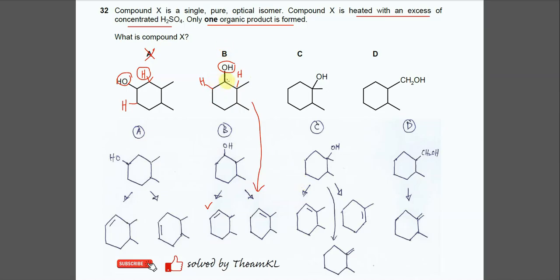So since the compound in B can produce two alkenes, it's not the answer.